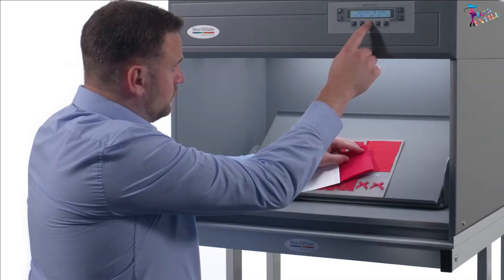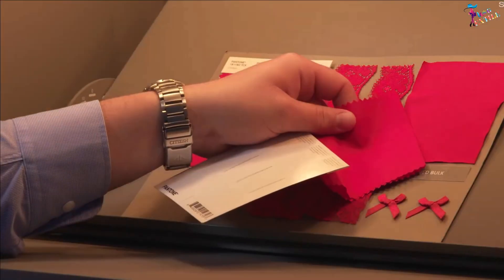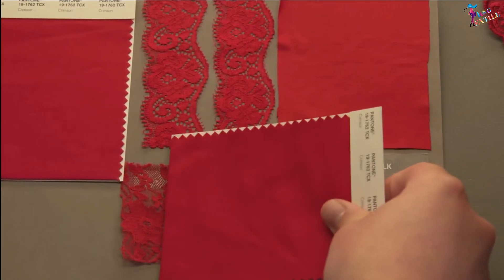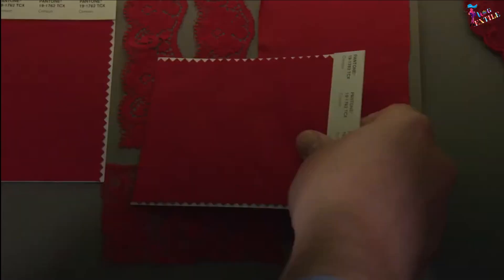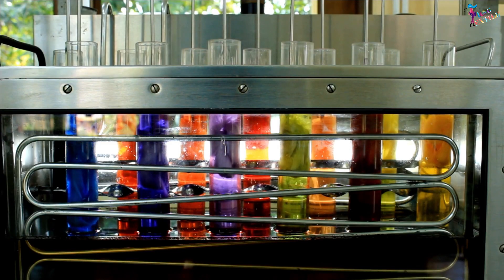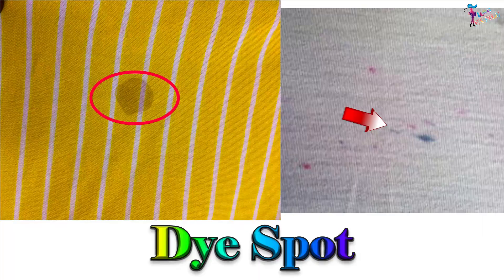Dyeing is the most technical priority in the textile industries because you need to match the pre-production sample and production sample shade with buyer's approved sample shade, and it's not an easy job. In some cases, shade doesn't match and you need to re-dye the whole batch, and in some cases the following dyeing faults occur.